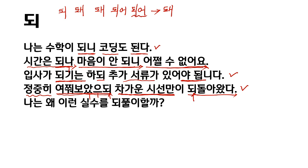나는 왜 이런 실수를 되풀이 할까. This 되 means 'again.' 왜 이런 실수 — why this kind of mistake — I repeatedly commit.